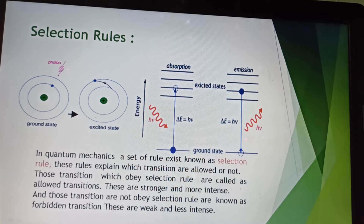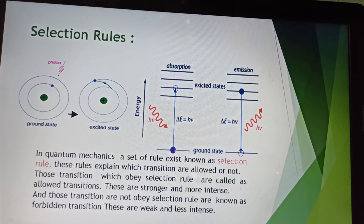When an incident photon is absorbed by an electron of an atom, the electron is excited from ground state to excited state. In this energy level diagram we can see the electrons are excited from the ground energy level to higher energy level, lower energy level to higher energy level.